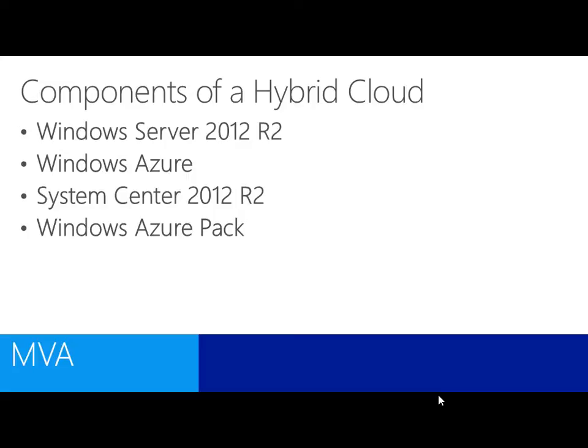Windows Azure is our public cloud offering. We offer things in Windows Azure from platform services — letting developers write to a certain application — to infrastructure services, where from an IT perspective we get to stand up and configure our own servers and connect them down to our infrastructure. Azure is built on Windows Server 2012 at the core of its DNA. System Center 2012 handles all the management, configuration, and maintenance in the cloud. Being able to monitor our cloud services is just as important as monitoring our on-premise resources, and System Center doesn't really care where that server is — cloud or on-premise.